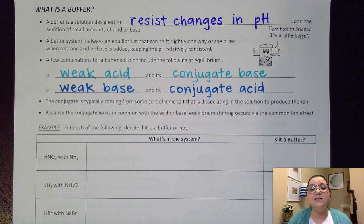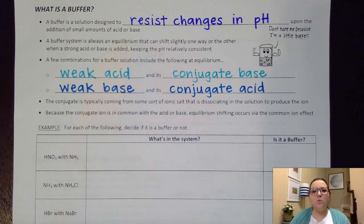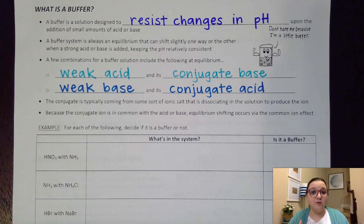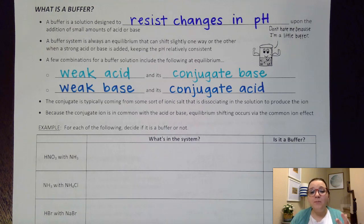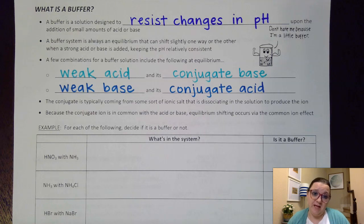The way that it works is that a buffer system happens to be an equilibrium system. And so when I add that acid or base to it, what will happen is that equilibrium will shift around to reduce that stress via Le Chatelier's principle, and so we'll minimize the amount of pH change that we'll see. It's not that we won't have any pH change at all, but it will definitely be reduced from what it could have been.